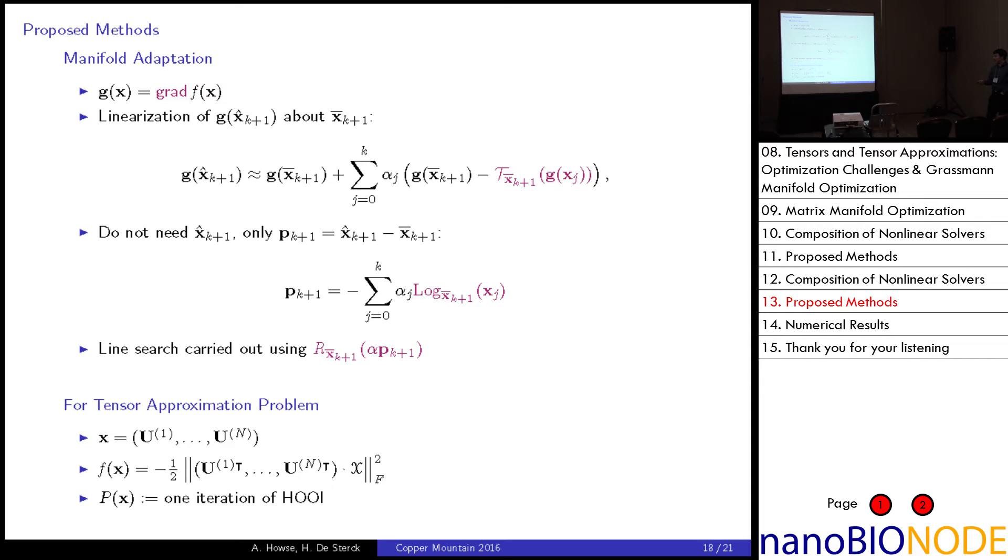And as in the nonlinearly preconditioned NCG case, x will be our n-tuple of matrices. This is the same objective function and we also use one iteration of HOOI as our preconditioner p of x.